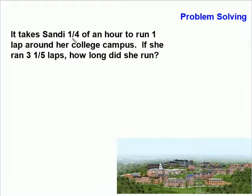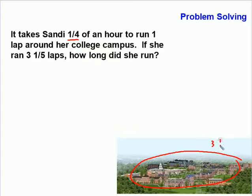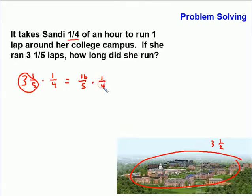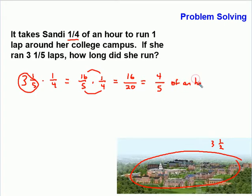Let's solve a problem using multiplication. It takes Sandy a quarter of an hour to run one lap around her college campus. If she runs three and one-half laps, how long did she run? We'll multiply three and one-fifth times one-fourth to get the total time. We convert the mixed number: three times five is fifteen, plus one is sixteen, over five — times one-fourth. Top times the top gives us sixteen, and bottom times the bottom gives us twenty. Sixteen-twentieths simplifies, since four goes into both sixteen and twenty: sixteen divided by four is four, twenty divided by four is five. It took her four-fifths of an hour to run.